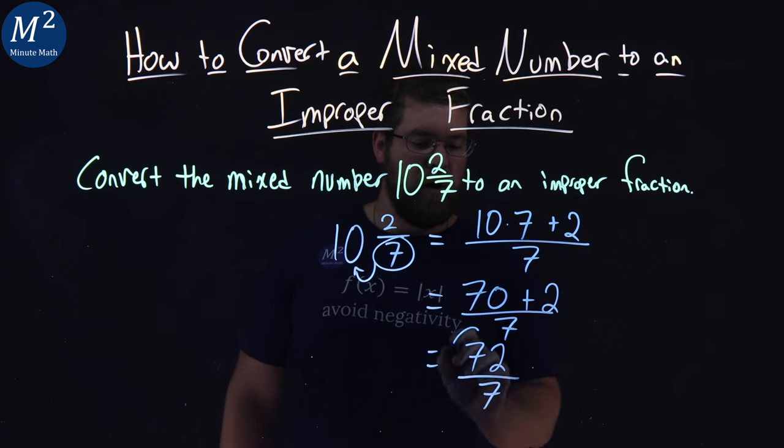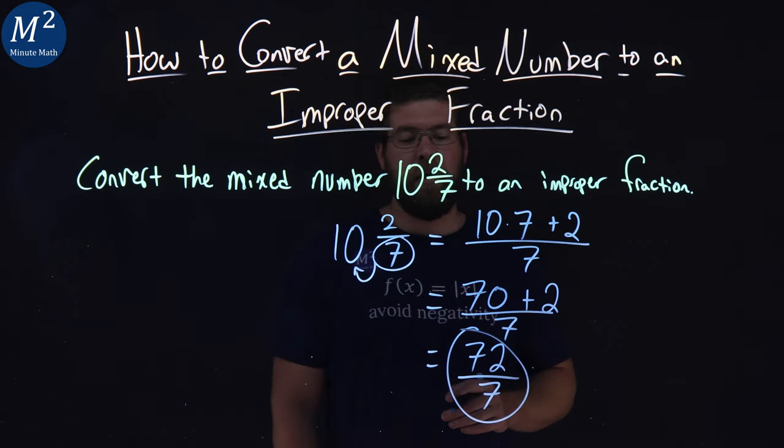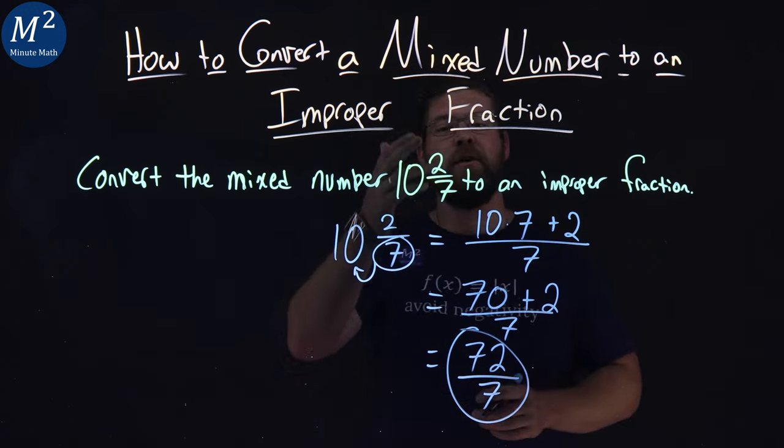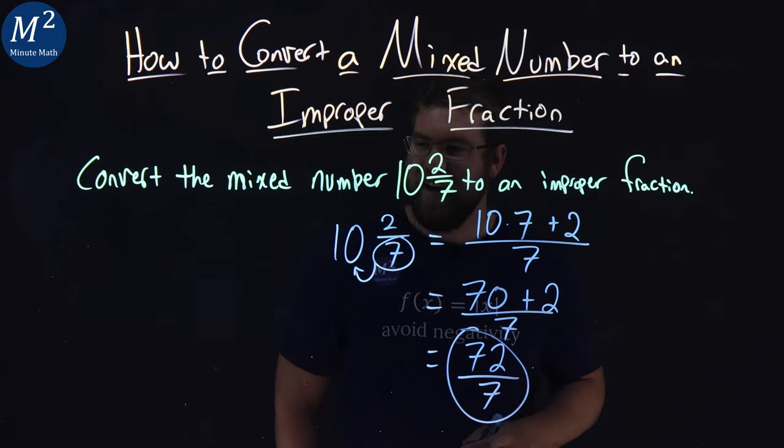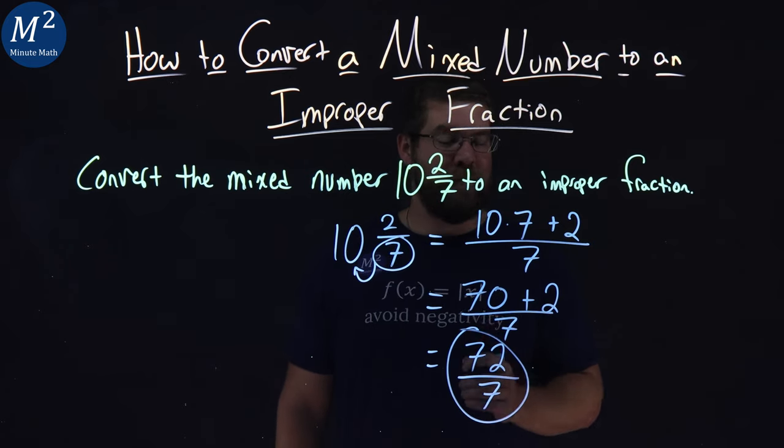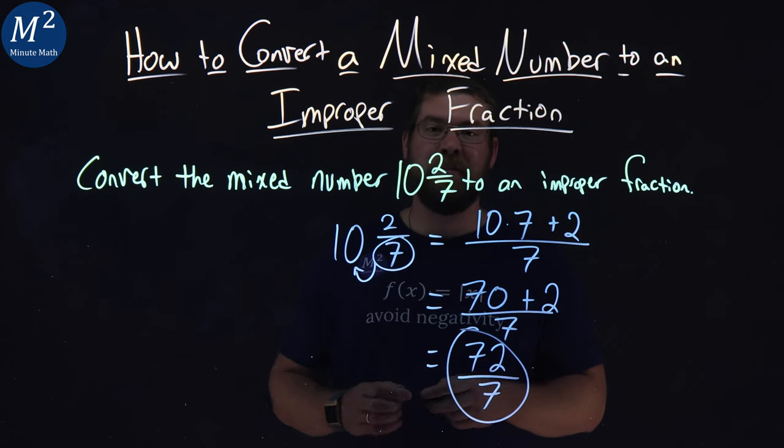Our improper fraction from 10 and 2 sevenths as an improper fraction is equal to 72 over 7.